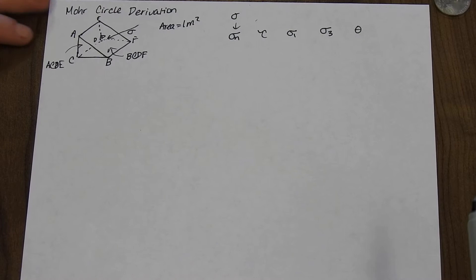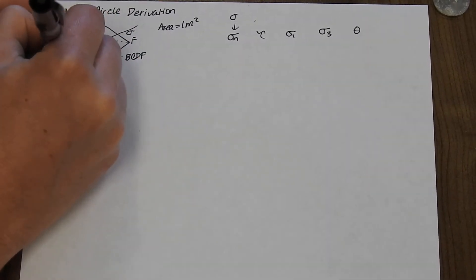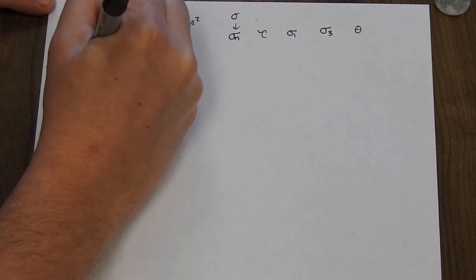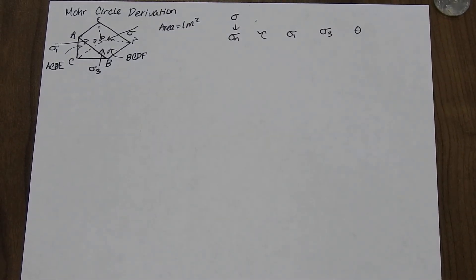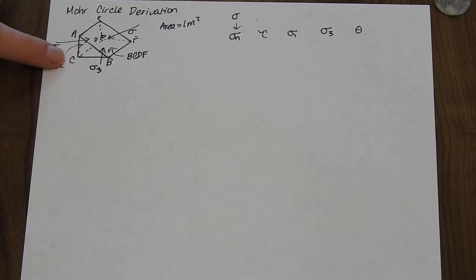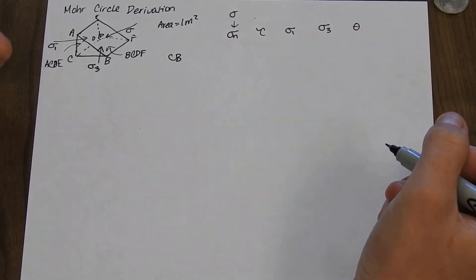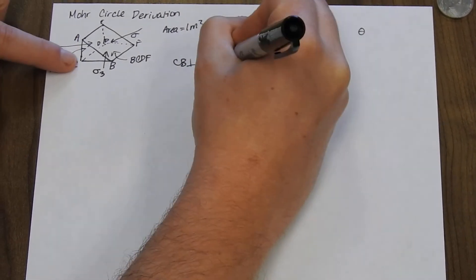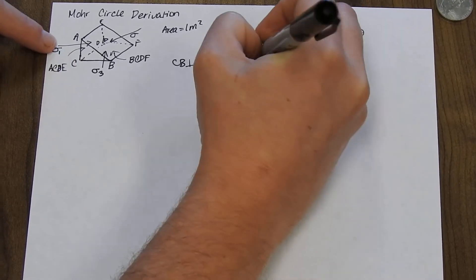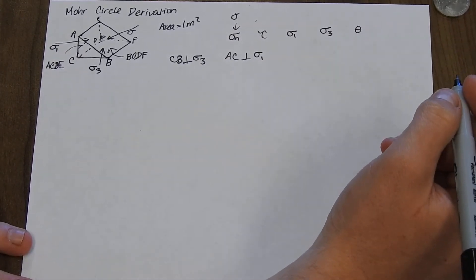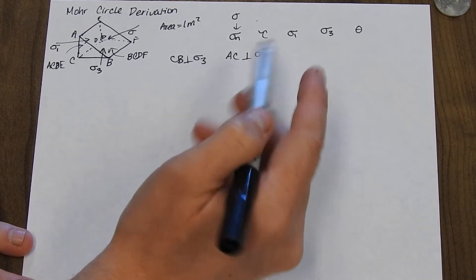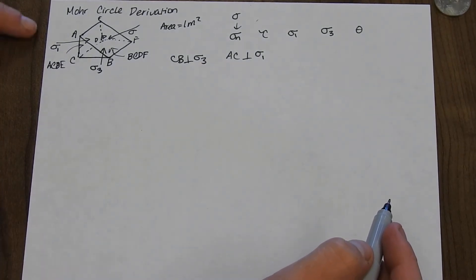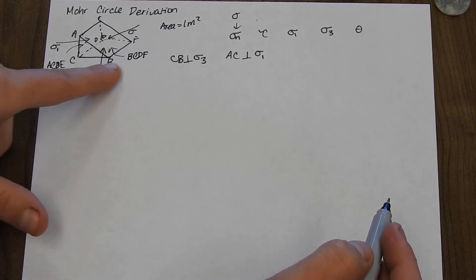Let's let sigma one be horizontal, coming in from the side, and we'll let sigma three be vertical, being applied to this bottom face. That means that side CB — if we just cut that end triangle piece out — CB is going to be perpendicular to sigma three, and AC is going to be perpendicular to sigma one. Now these are stresses, and stresses have to be applied to an area, not just a line. So we need to figure out the areas of ACDE and BCDF.